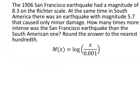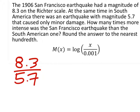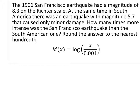All right, this one is extremely wordy and we've got two different earthquakes. The 1906 San Francisco earthquake had a magnitude of 8.3 on the Richter scale. At the same time, in South America, there was an earthquake with magnitude 5.7 that caused only minor damage. How many times more intense was the San Francisco earthquake than the South American one? We can't just compare the Richter readings — what we want to compare is how much bigger one was than the other on the seismograph. We don't have that, so we have to figure it out.